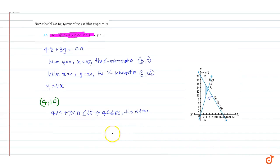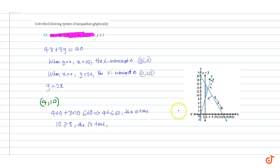Now we will check the second inequality, y greater than or equal to 2x. Substituting (4, 10): 10 is greater than or equal to 2(4) equals 8. This is true. Hence the feasible region lies in this direction from the line y equals 2x.